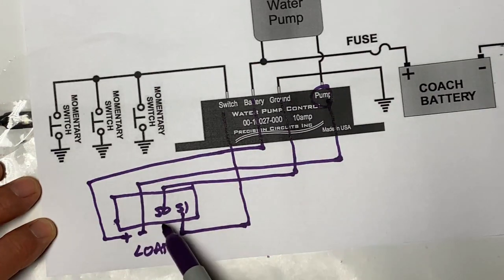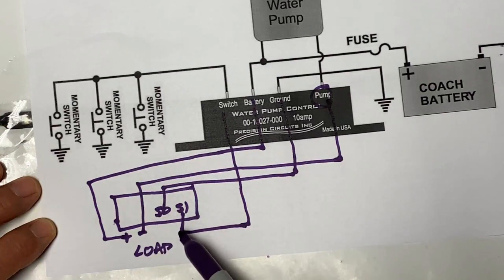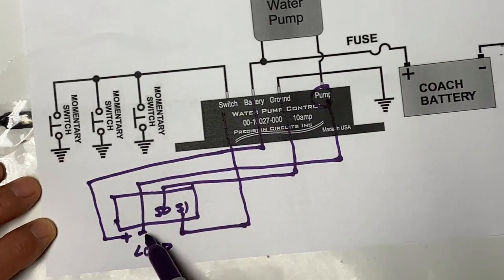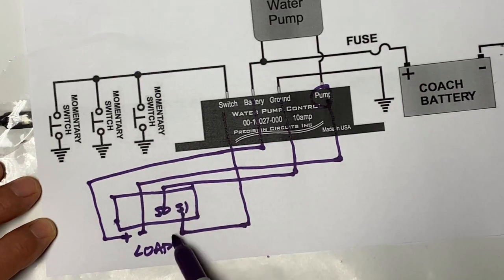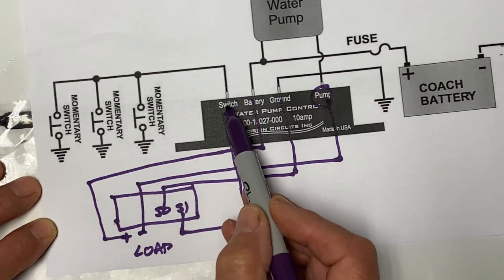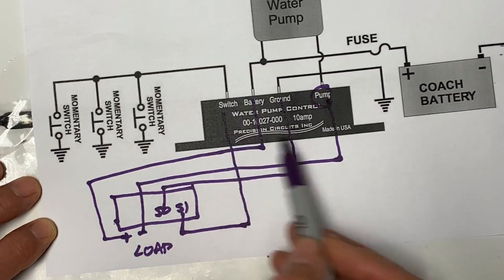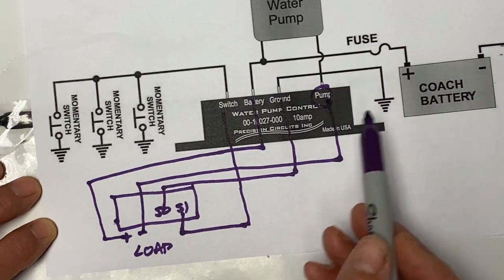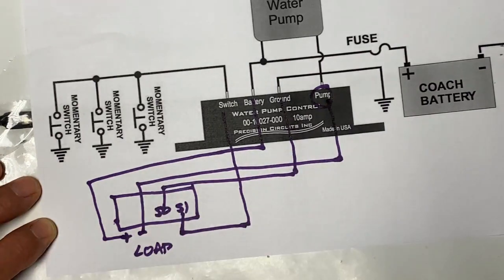The timer counts down the seconds, however you want it set. 900, 899, 898, etc. And at the end of the time delay, this relay closes, connects the negative to the switch, and shuts off the water pump, shuts off the ring light, and shuts off the timer.